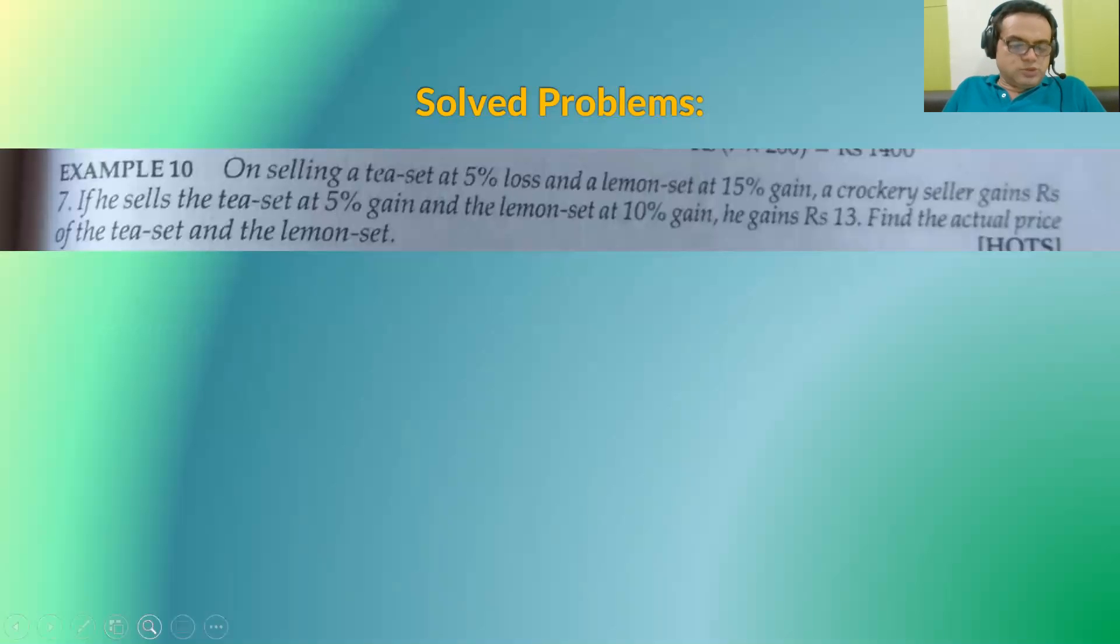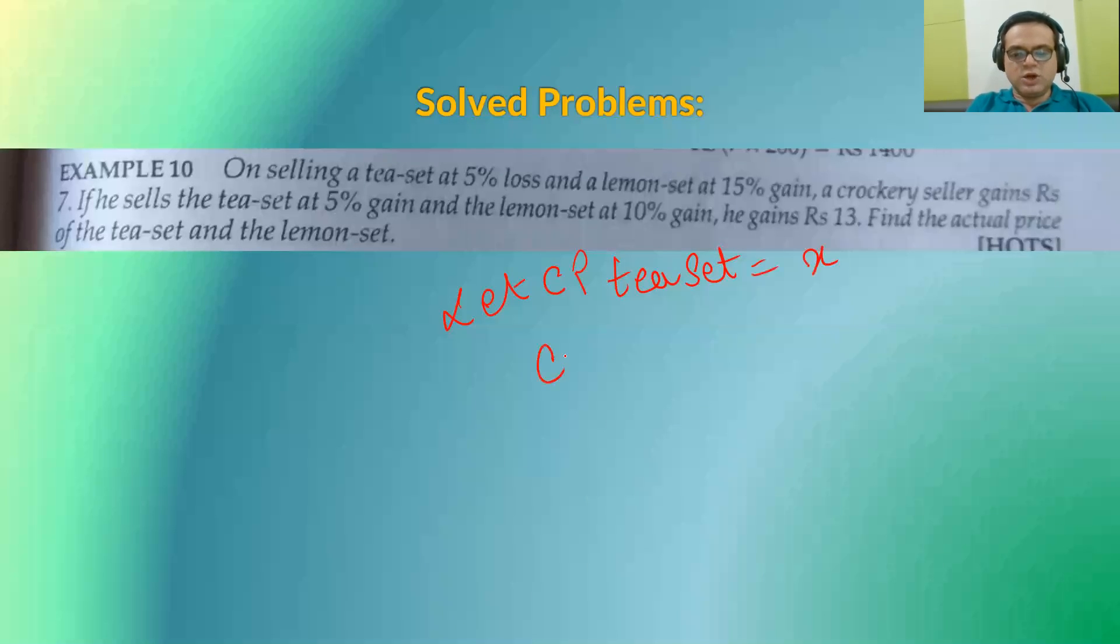Let us try to solve this question. How to start this question? First of all, what I will do is, I will assume that let the cost price of tea set is, say, X and cost price of lemon set is Y.